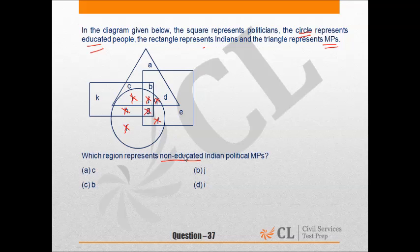Now Indian. It should be Indian — rectangle represents Indians. Only possible answers are B, C, and K.